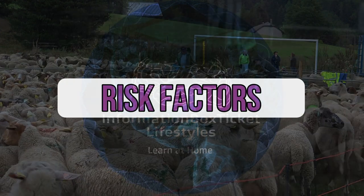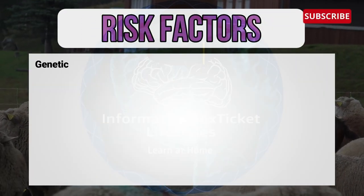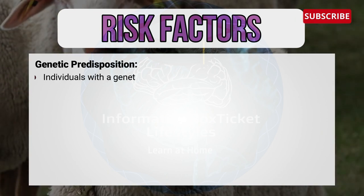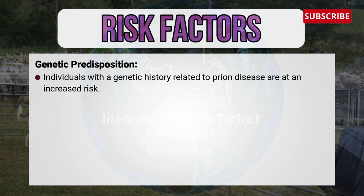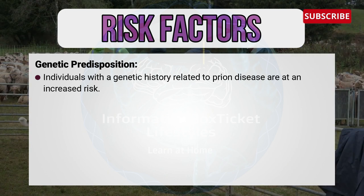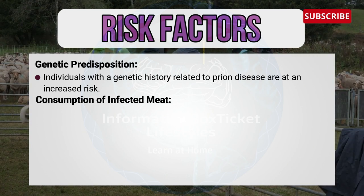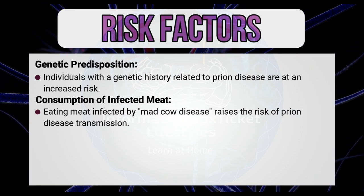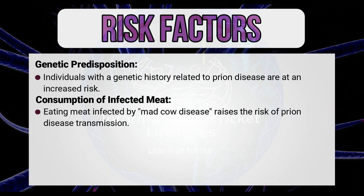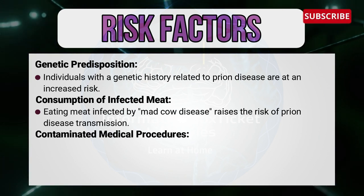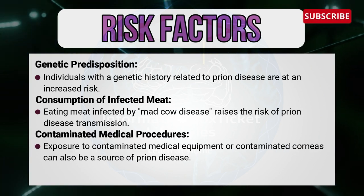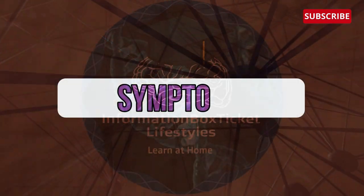Risk factors for prion disease include: genetic predisposition — individuals with a family history related to prion diseases are at increased risk; consumption of infected meat — eating meat infected by mad cow disease raises the risk of prion disease transmission; and contaminated medical procedures — exposure to contaminated medical equipment or contaminated corneal tissue can also be a source of prion disease.